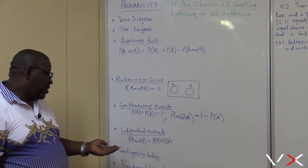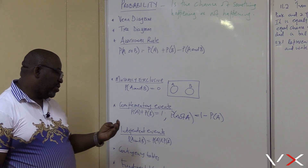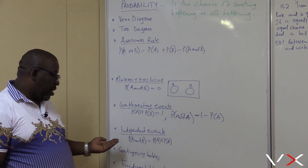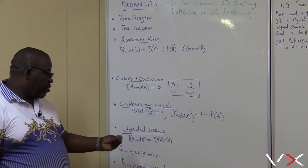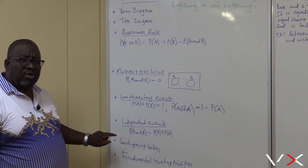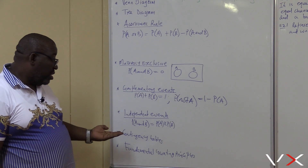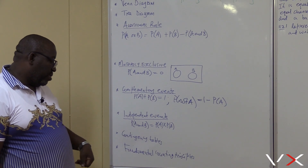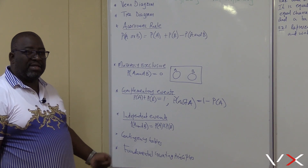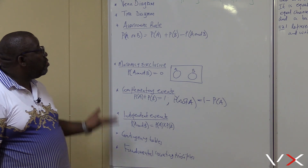Independent events: Probability of A and B equals Probability of A times Probability of B. That's where you have to prove independent events. We'll also be touching on contingency tables in this section, and lastly we'll be dealing with fundamental counting principles.